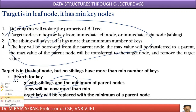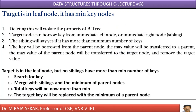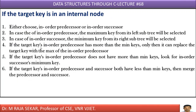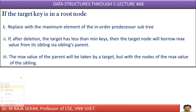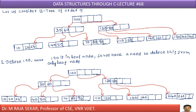I am requesting you to go through these points after discussing the numerical example. If the target key is an internal node, what happens? That will also be discussed. We will try to understand what to do if the target key is a root node. Once again, I am requesting you to go through these points or read them after explaining this particular example.